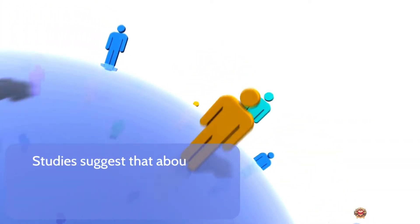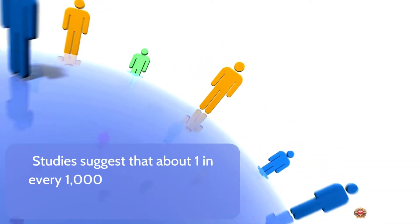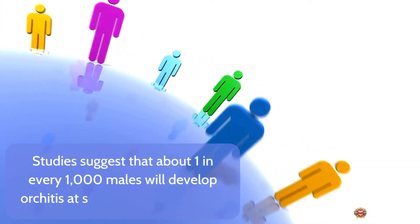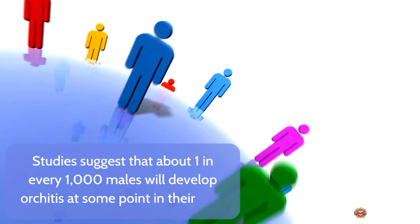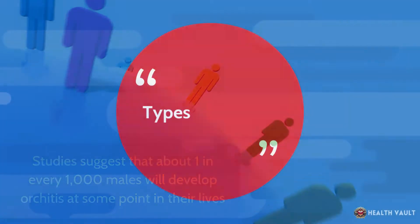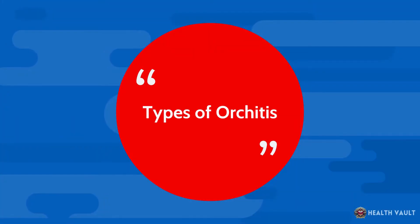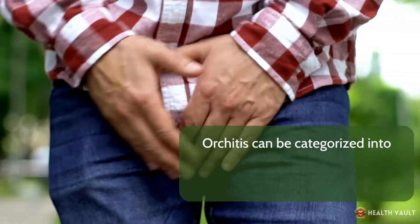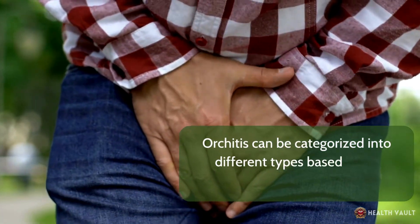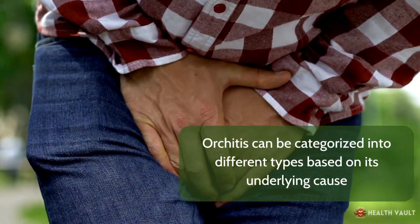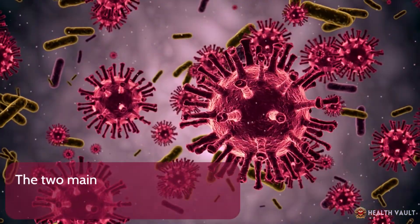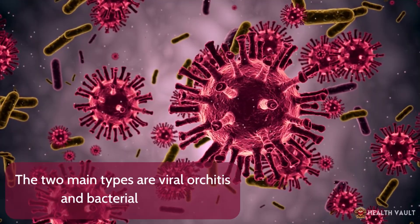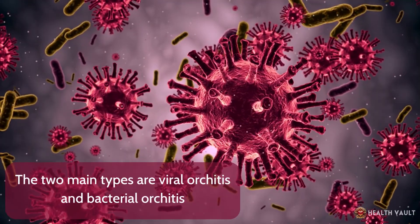Studies suggest that about 1 in every 1,000 males will develop orchitis at some point in their lives. Orchitis can be categorized into different types based on its underlying cause. The two main types are viral orchitis and bacterial orchitis.